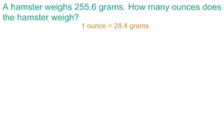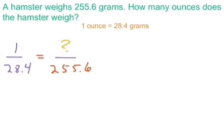So let's try another one here, another word problem. A hamster weighs 255.6 grams. How many ounces does the hamster weigh? We've got our conversion right here. That's our conversion factor. So let's set up our first proportion. We know that 1 ounce is equal to 28.4 grams. So now what if we have 255.6 grams? How many ounces is that going to be for this hamster?